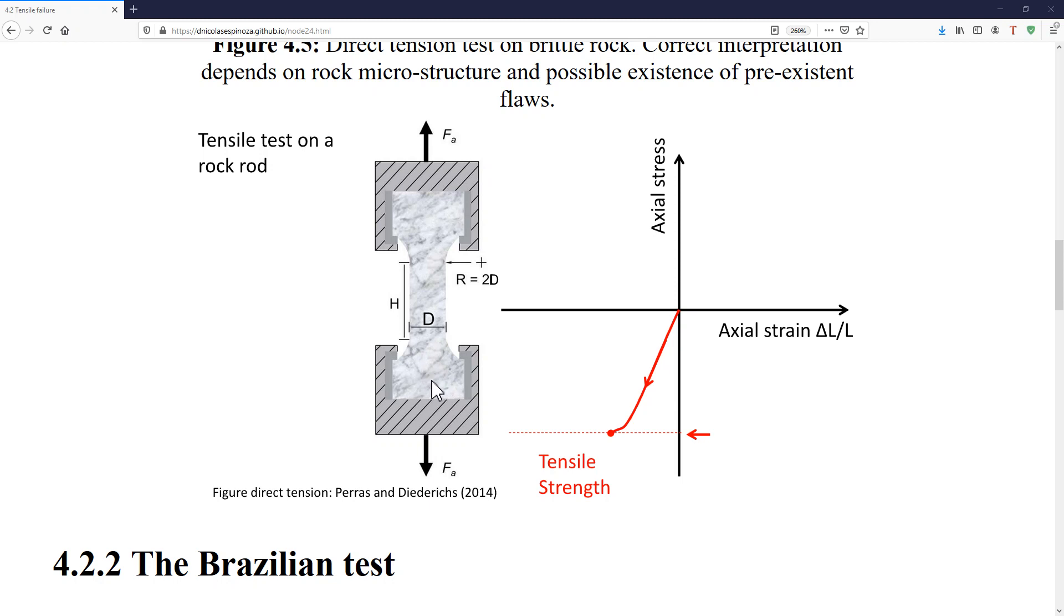An alternative to this kind of test could be that you bond the ends of the rock to what you're going to use to pull the rock with, but then if the bonding strength of your cement is lower than the bonding strength of the rock, then you're not going to be able to break the rock, but you're just going to break the cement. So, although you could do this type of test for a rock, it is pretty difficult.